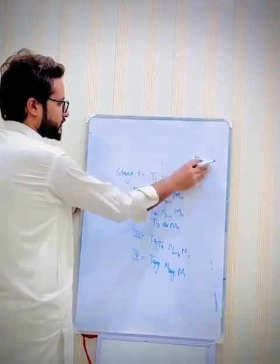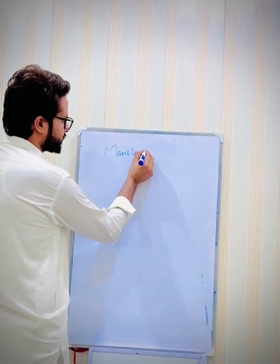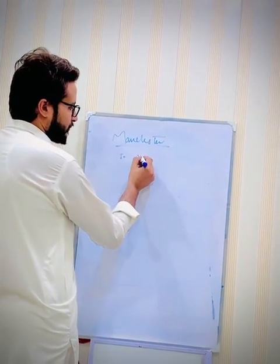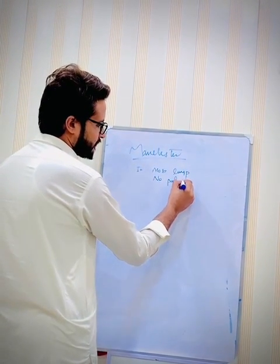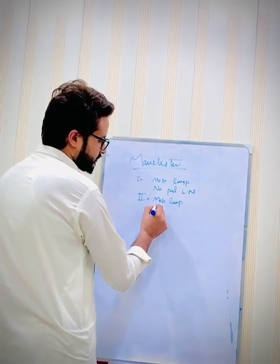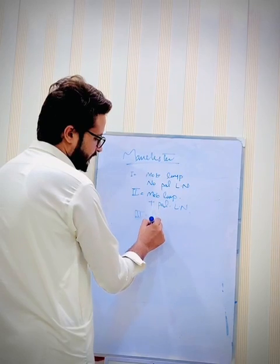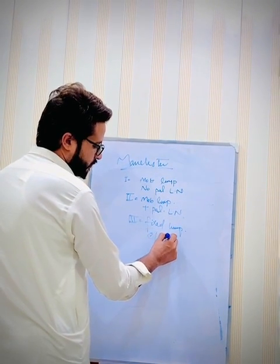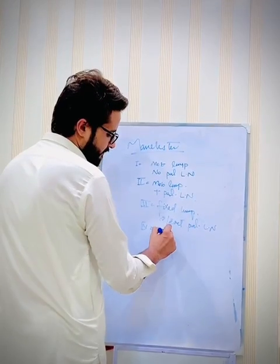Now we have to discuss another staging system called the Manchester staging system. There are four stages. Stage one states there will be a mobile lump in the breast with or without palpable lymph nodes. Stage two will have a mobile lump in the breast but palpable lymph nodes present. Stage three will have a fixed lump in the breast with or without palpable lymph nodes. Stage four will have distant metastasis.